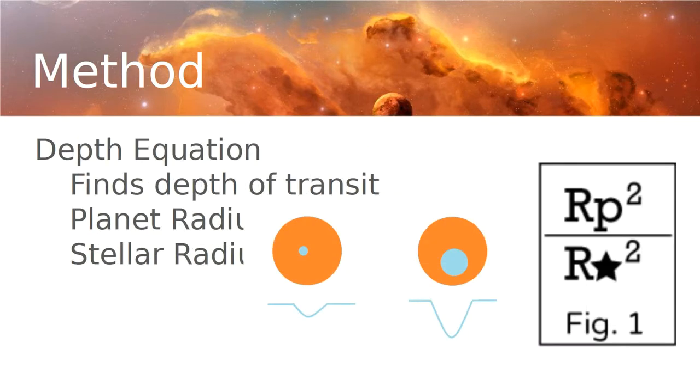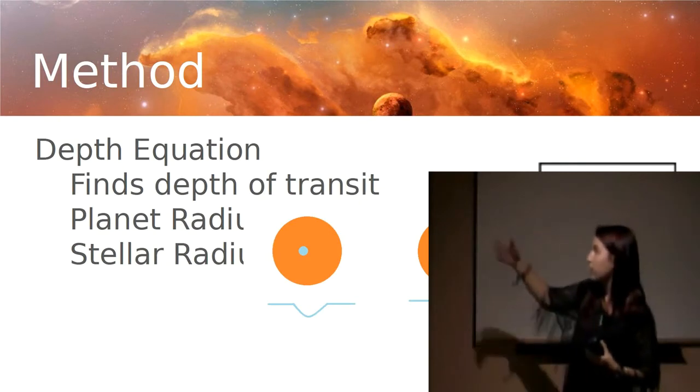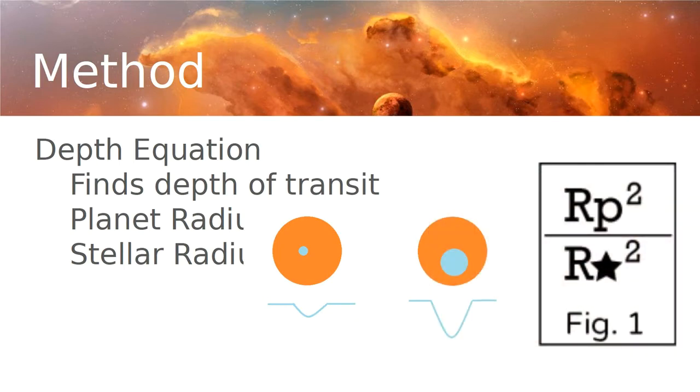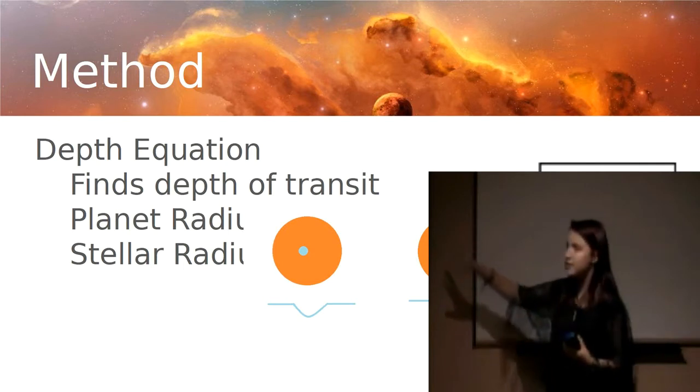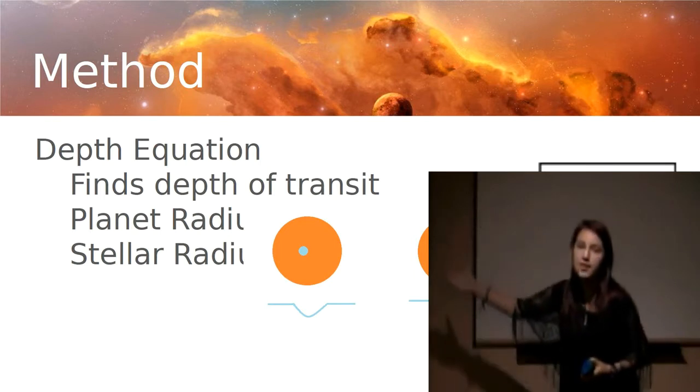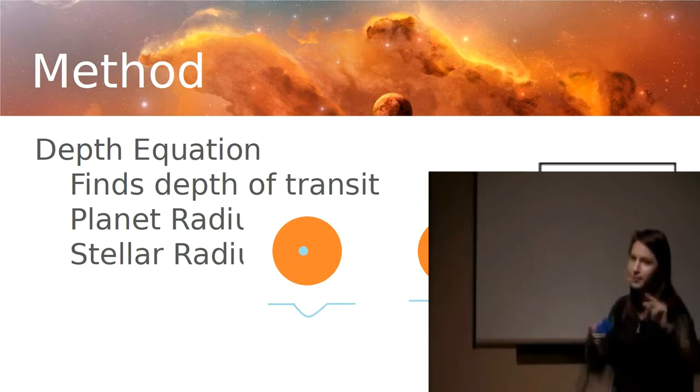So my first step was to find how deep that transit was, which would give me basically the size of the planet. Smaller planets would have more of a smaller dip, while larger planets will have a larger dip, and that's because they're blocking more light from that star. So in order to find the transit depth, the planet radius, and the stellar radius, I used this. And that's the radius of the planet squared divided by the radius of the star squared. And there's some miscalculations that you have to go through, like dividing this by 110 to convert it into stellar radii.